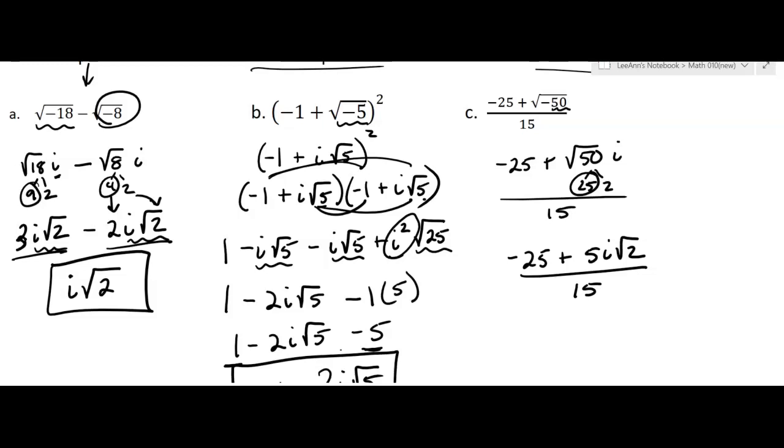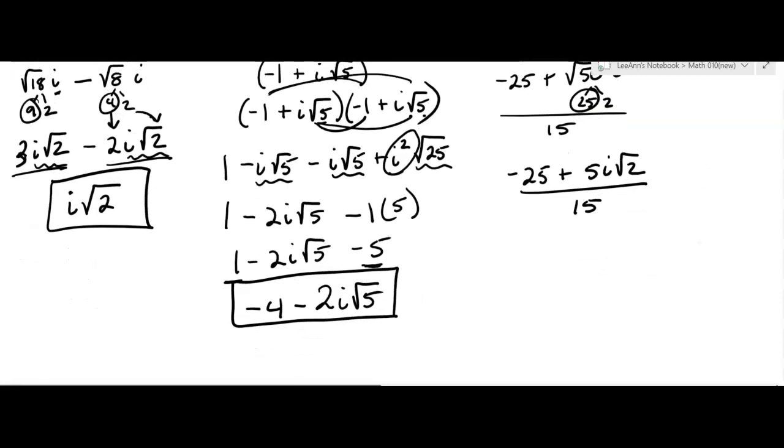Now, this is going to simplify. And in the numerator, do you see there's a common factor of 5? So I'm going to write it as 5 times negative 5 plus i square root 2. I'm factoring out of 5, just like we did a GCF when we were factoring polynomials over 15. But now, I can cancel that 5 and that 15 and make it a 3.